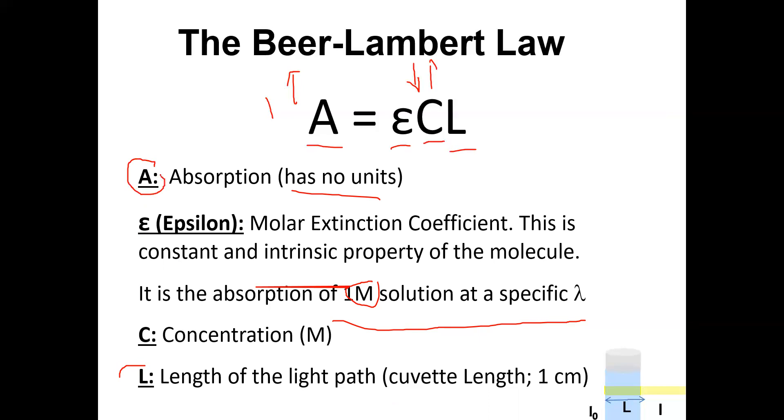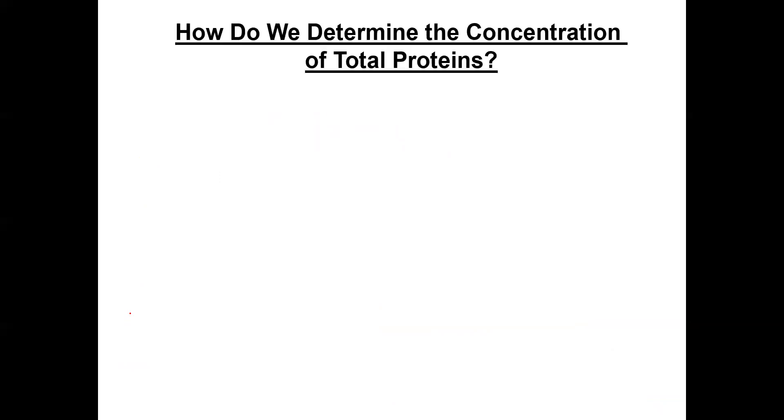Absorbance A is the dependent variable, and concentration C is the independent variable. As you change the concentration — increase it — you increase the absorbance, and vice versa. So how do we actually determine the total protein concentration? We're given an unknown patient sample and want to determine their total protein concentration to see if they have hyperproteinemia.